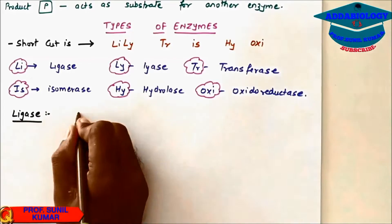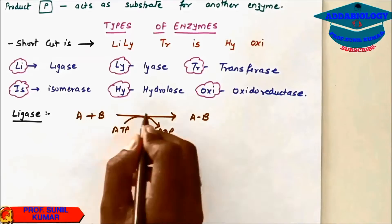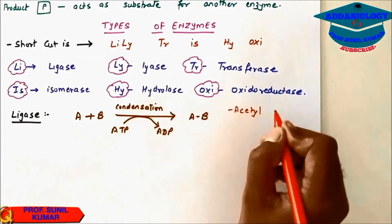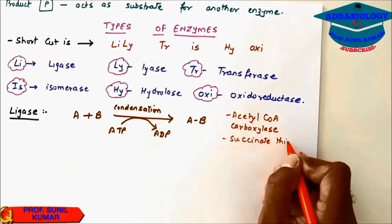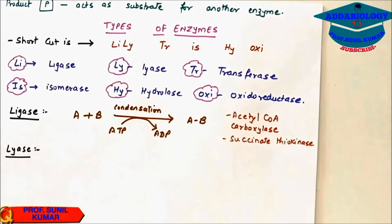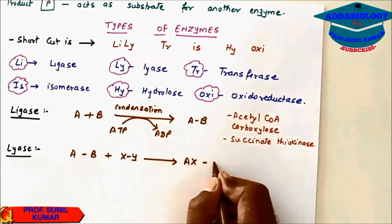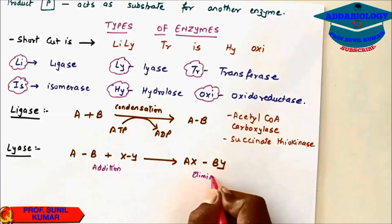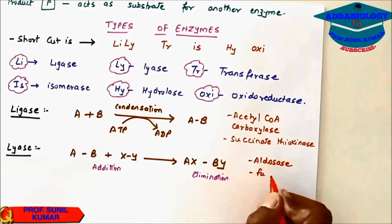Ligase is responsible for addition: A plus B gives AB, that is a condensation reaction utilizing energy. Examples include acetyl coenzyme A carboxylase and succinate thiokinase. Lyase is an addition-elimination reaction. Examples include aldolase and fumarase.